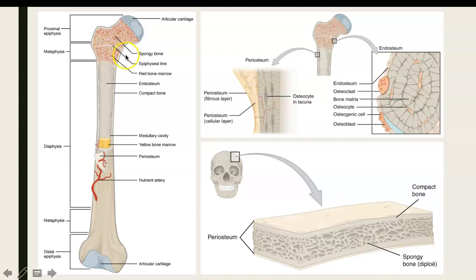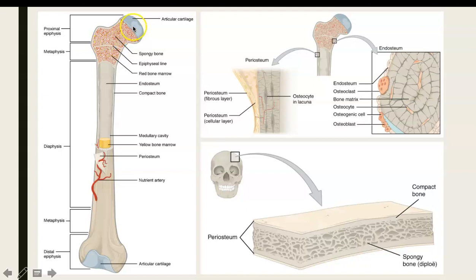That line is referred to as the epiphyseal line. When the bone is growing in a young child before they've reached their maximum growth, this line is referred to as the epiphyseal plate — more generally, we probably refer to it as the growth plate. This is where a bone gains its length. More on that when we get to 6.4 and I talk about bone growth. The epiphyseal line is what separates the epiphysis above and the metaphysis below.